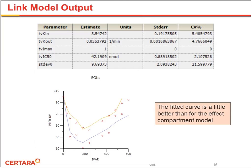Here are the results of the model fitting for the turnover model. We have excellent precision on all the parameters. IC50 comes out to be about 40, which is what we estimated by hand. If you look at the fitted curve, it is a little bit better than the effect compartment model. But still, it's not fitting the high dose as well as we want — in part that's just due to noise in the data. It would have been better if we'd come down and done a better job of fitting the Emax, the maximal effect.